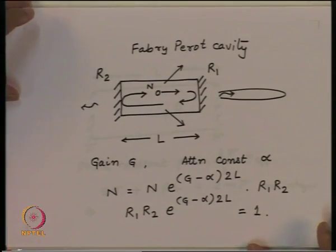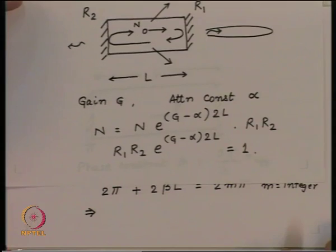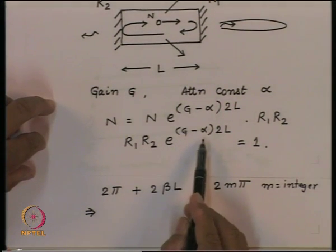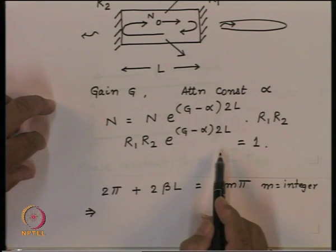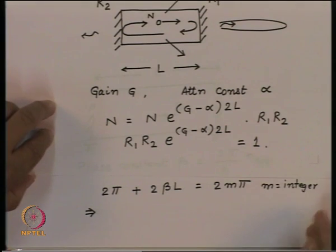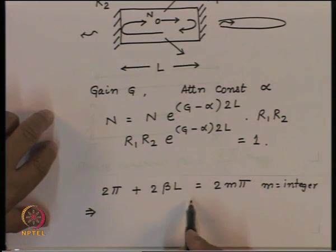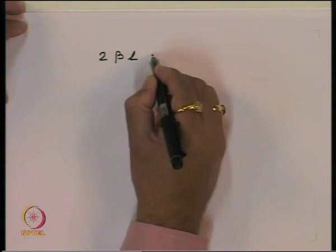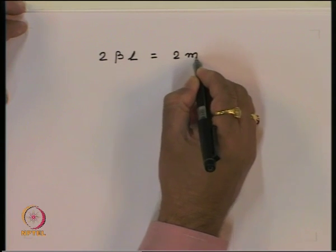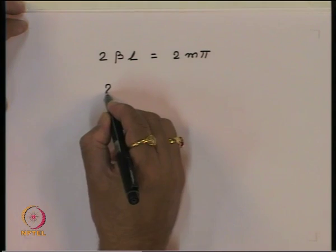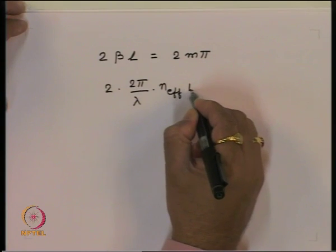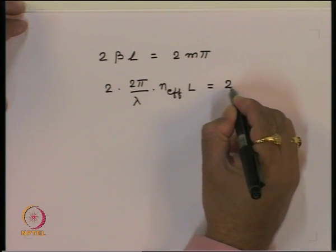For a coherent emission or laser to work, two conditions must be satisfied. One is the amplitude condition: R1 R2 e to the power (G minus alpha) times 2L equals 1. The second is the phase condition: 2 beta L equals multiples of 2 pi. Substituting for beta, we get: 2 times (2 pi divided by lambda) times n_effective times L equals 2m pi, which simplifies to L equals m times lambda divided by 2 n_effective.